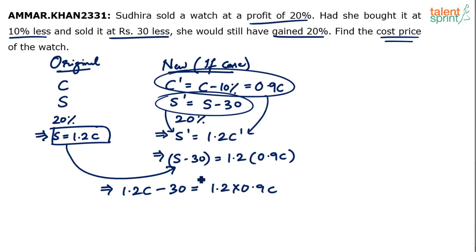Now simplify. I think 1.2 is common on both the sides. So I can take 1.2 common. It will be 1 minus 0.9C which is equal to 30. So basically I am writing all the steps in detail so that you can follow the solution. 1 minus 0.9 is 0.1. 0.1C is 30.